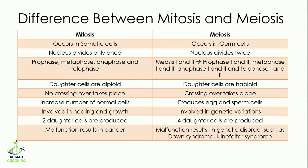In mitosis, malfunction results in cancer — if something goes wrong in the cell, it can divide uncontrollably, leading to cancer. In meiosis, malfunction results in genetic disorders such as Down syndrome or Klinefelter syndrome. It is very important for both mitosis and meiosis to proceed normally, as any malfunctioning can lead to disease.